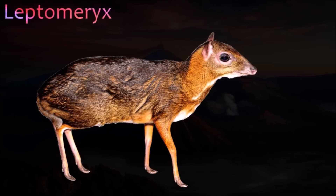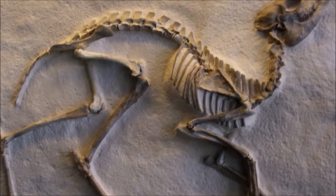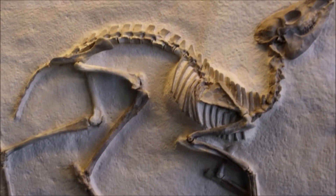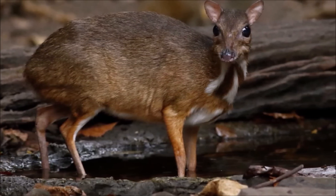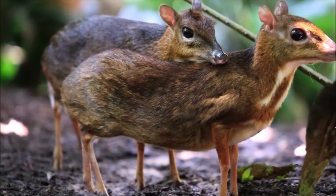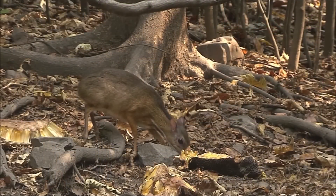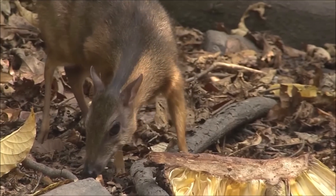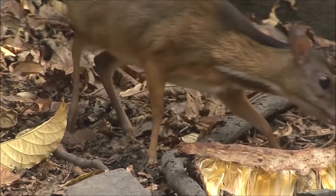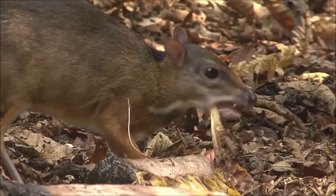Leptomeryx was a hornless ruminant from the late Eocene and Oligocene. Its fossils have been found in many parts of North America, and it is one of the most abundant fossils in the Big Badlands fossil beds of South Dakota. It was about the size of a mouse deer or chevrotain. It had relatively slender limbs bearing two hoofed toes on each foot. It was an artiodactyl — an even-toed hoofed mammal — though only distantly related to living chevrotains. Leptomeryx had a delicate stature, no antlers or horns, and in the males, enlarged upper canines that protruded as small tusks. Recent research has revealed it was among the most primitive of ruminants and therefore a distant relative of all ruminants including deer, cattle, and camels.